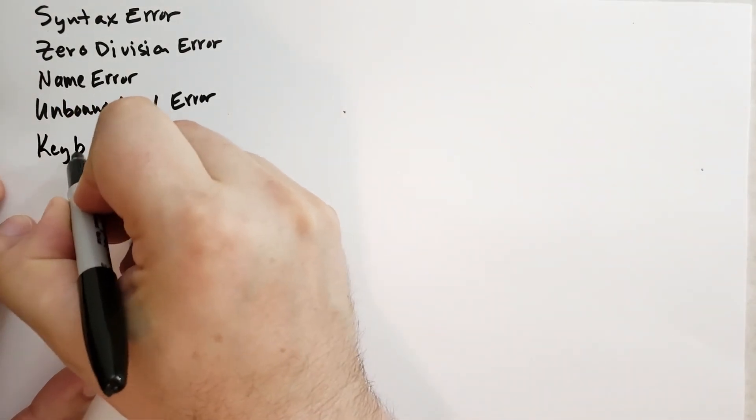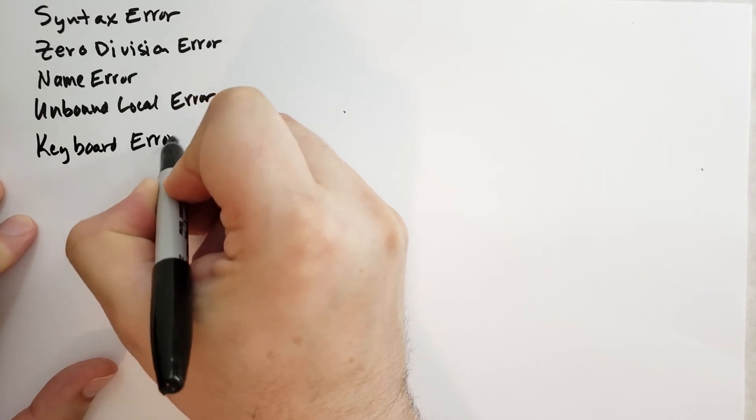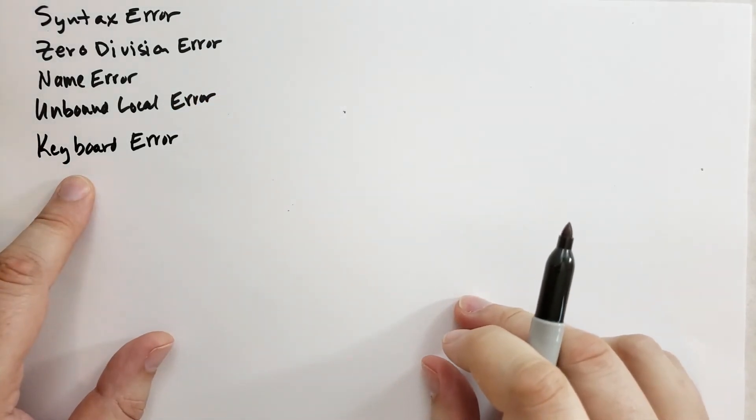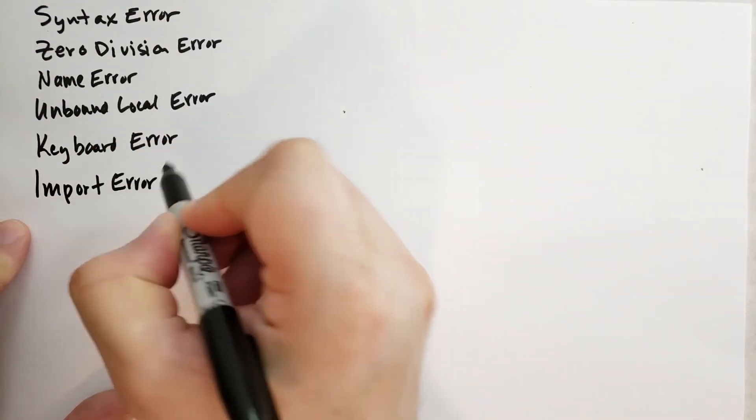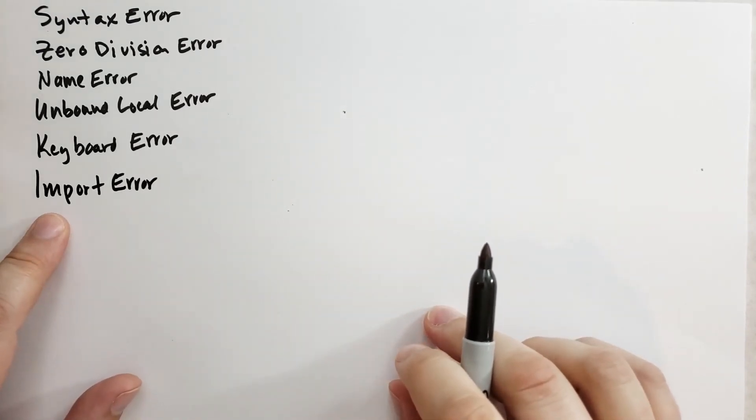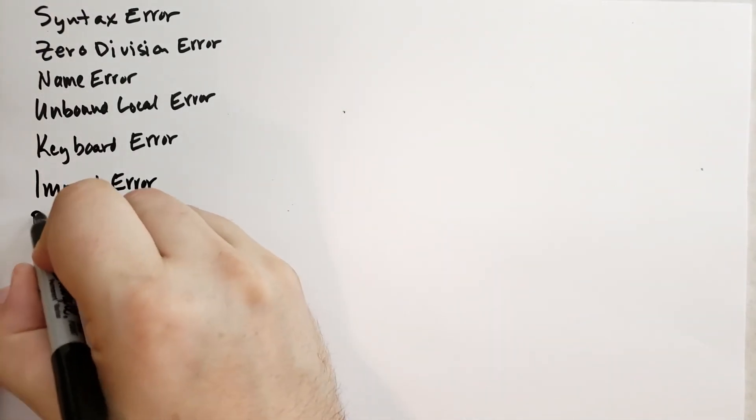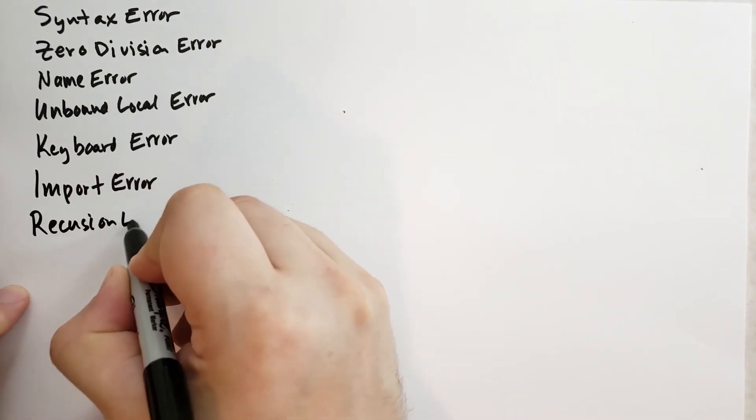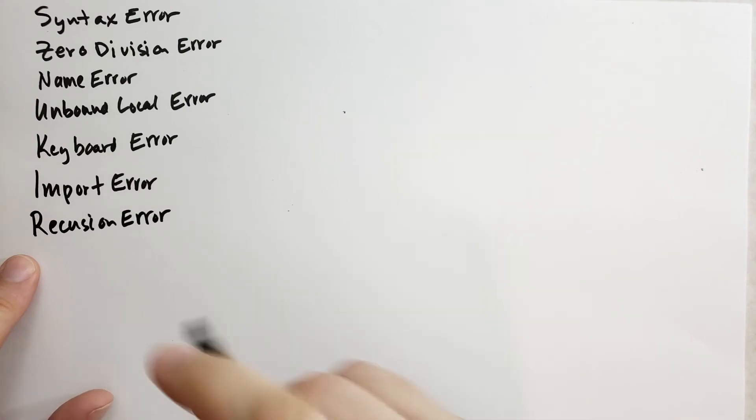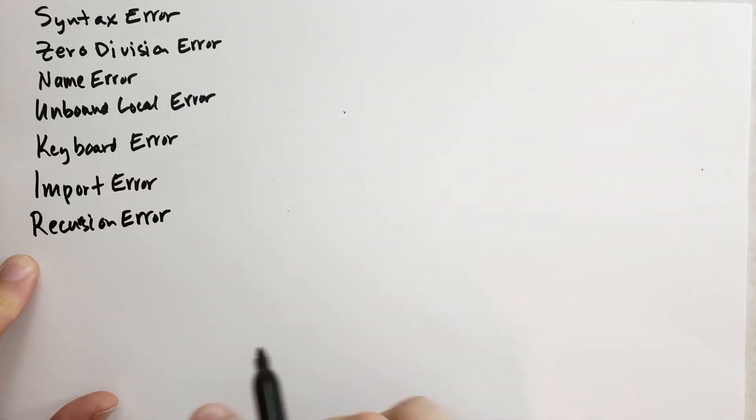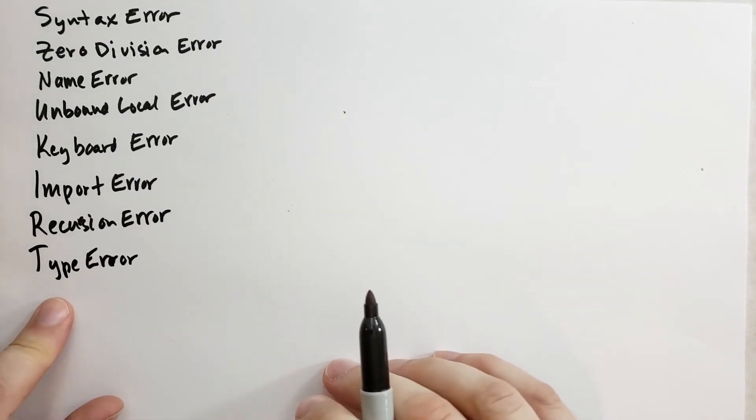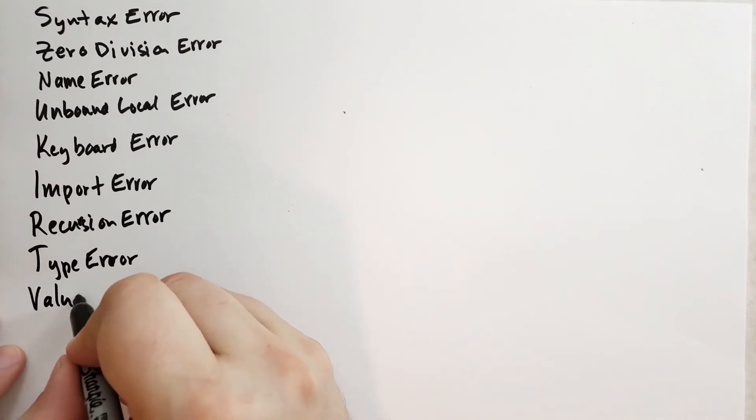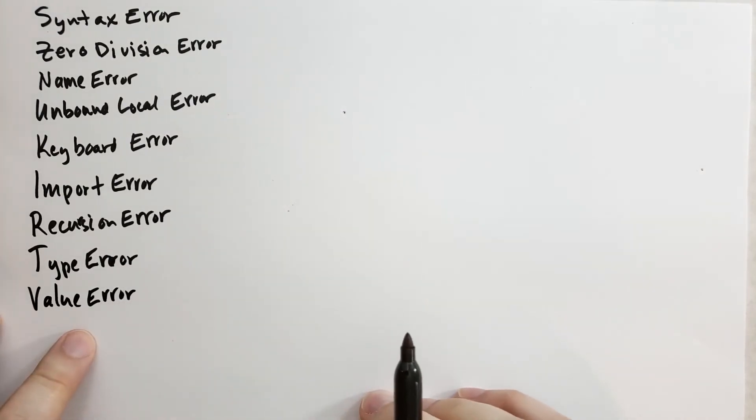You may have seen a keyboard error. You get this when you're running Python code and hit control C. If you've tried to import a module unsuccessfully, you would see an import error. Either the module doesn't exist or the module is broken. If you write a recursive function and it calls itself too many times, you get a recursion error. You get a type error if you pass in the wrong number or wrong type of arguments into a function. And you get a value error if it's the right type but the wrong value.